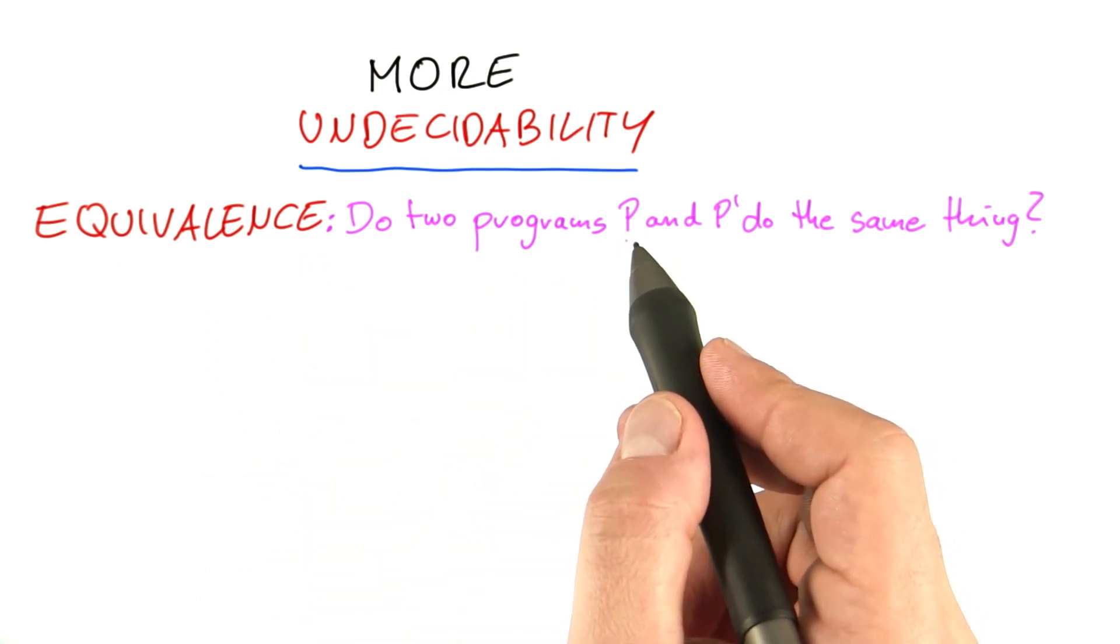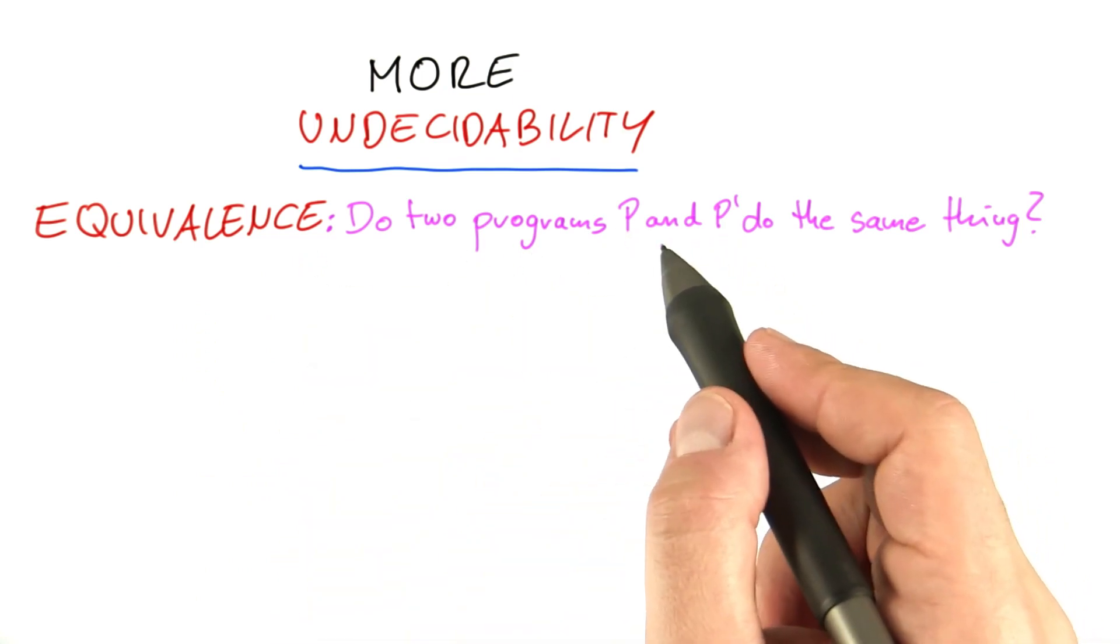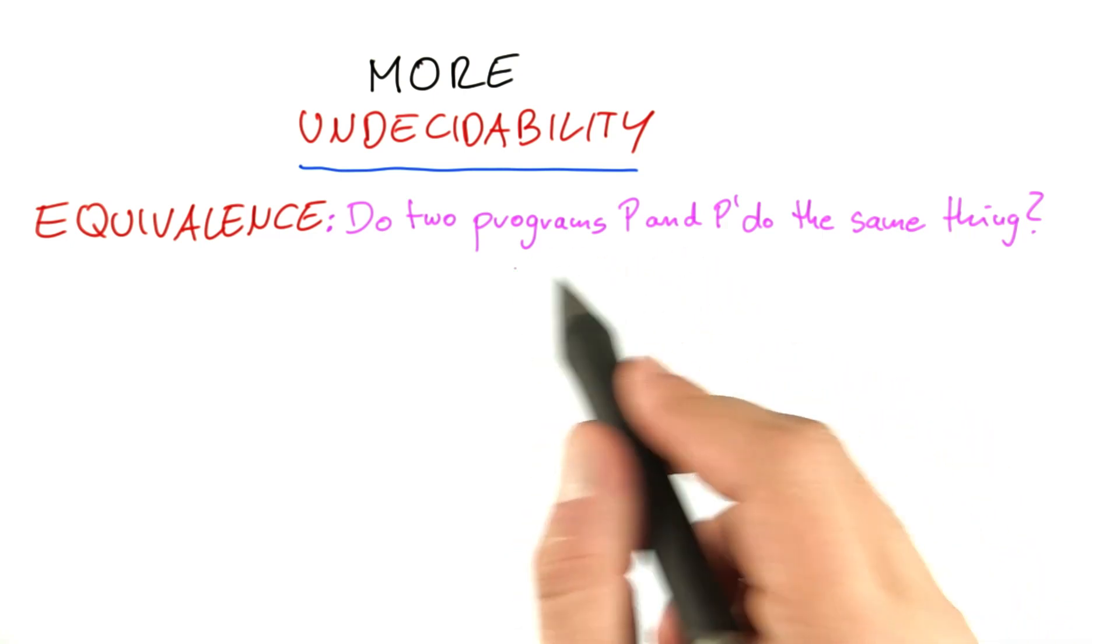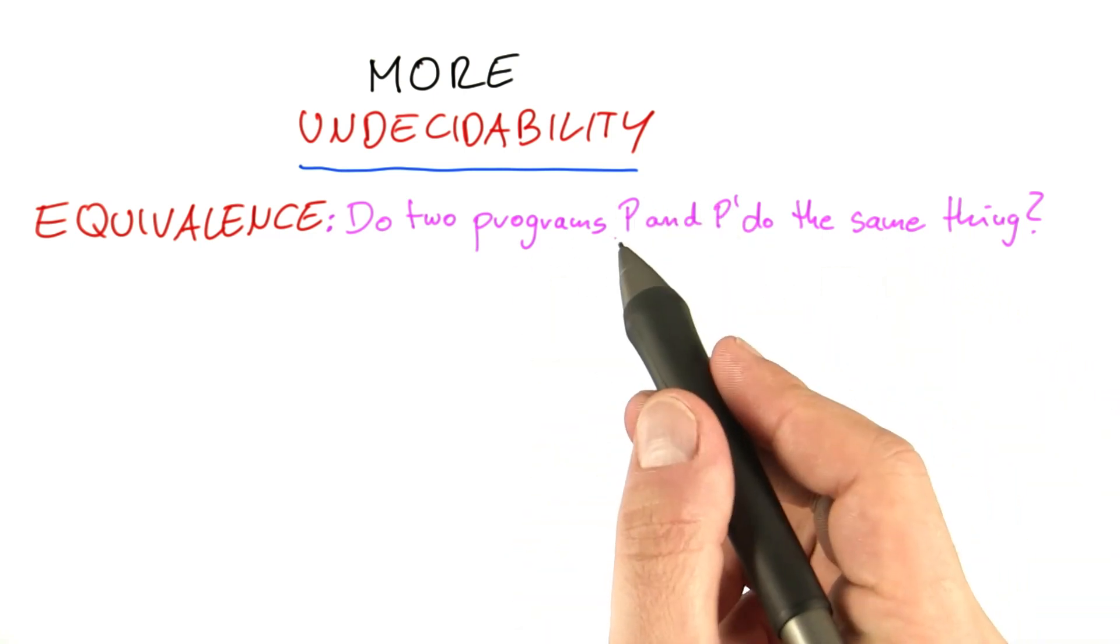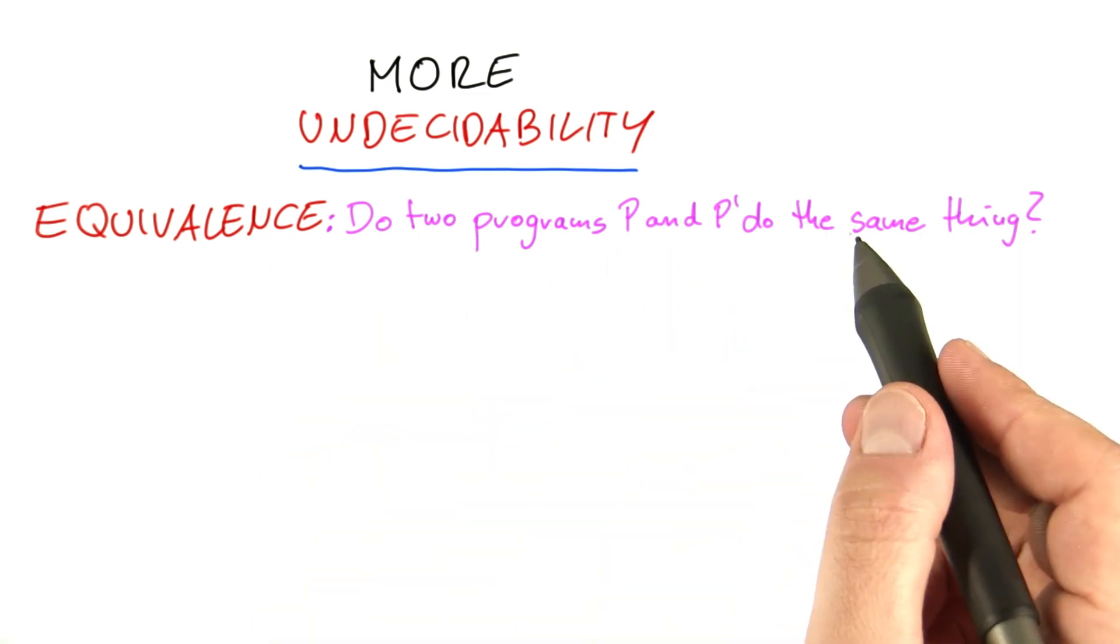So this time we're given two programs, P and P', and the question that we want to answer is: do these two programs do exactly the same thing? For example, do they implement exactly the same algorithm, only using a different type of implementation?